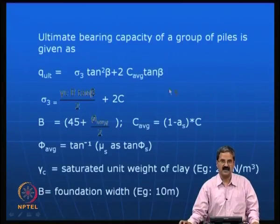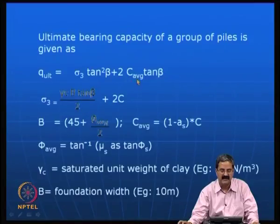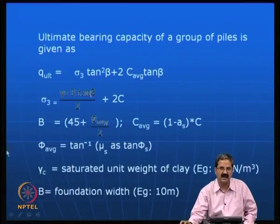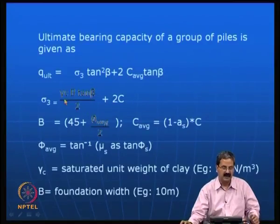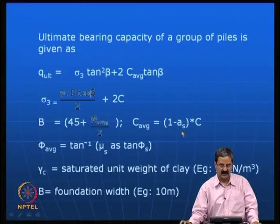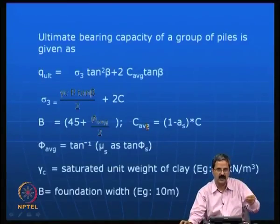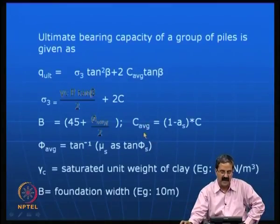For a group of granular piles, the ultimate bearing capacity Q is given in terms of lateral stress into tan²β plus 2C tan φ, where β = 45 + φavg/2, and C and φ are average values for the improved ground. Since two materials are present, you calculate average values of cohesion and friction for the improved ground. For example, using a saturated weight of 20 kN/m³ for the clay, one can calculate the group capacity.